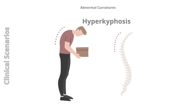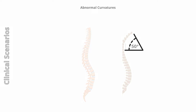Hyperkyphosis: an abnormal increase in thoracic curvature causing a hunchback, often due to osteoporosis, muscular weakening, or aging. A kyphosis angle greater than 50 degrees is indicative of hyperkyphosis.